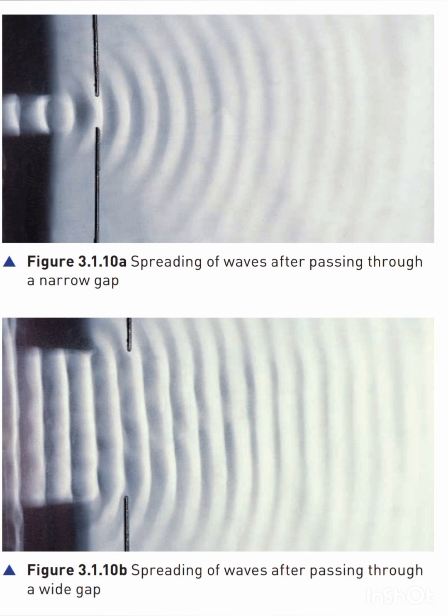First we will talk about water waves — diffraction through a narrow gap, as shown in figures 3.1.10a and 3.1.10b. Straight water waves in a ripple tank are meeting gaps formed by obstacles. In figure 3.1.10a the gap is narrow, and the wavefronts curve around the edges of the gap, producing a circular wavefront.